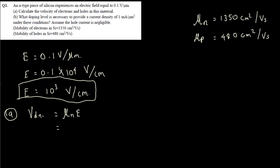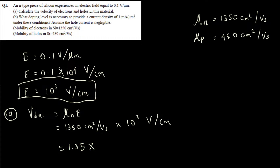Using the electric field in centimeters to cancel units: μn is 1350 cm²/V·s, multiplied by E = 10³ V/cm. This gives 1.35 times 10³ times 10³, totaling 1.35 × 10⁶ centimeters per second. That is the drift velocity of electrons, vdn.